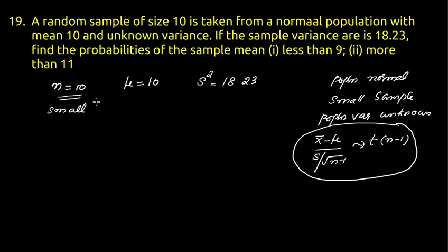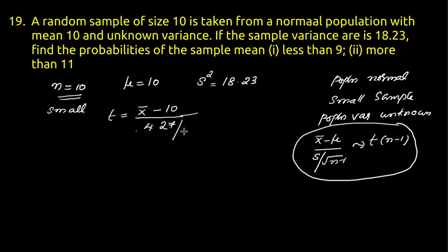To find the probabilities, we define t equal to X-bar minus mu divided by s divided by root of n minus 1. Here mu is 10 and s-squared is 18.23, so s is approximately 4.27. Dividing by root of n minus 1, that is root of 9 equal to 3, gives 4.27/3 equal to 1.42. Therefore, the random variable (X-bar minus 10) divided by 1.42 follows a t-distribution with 9 degrees of freedom.